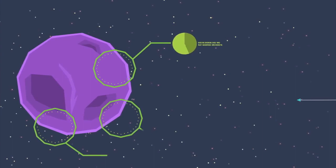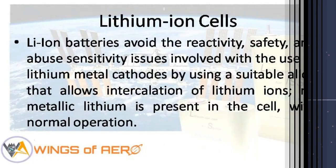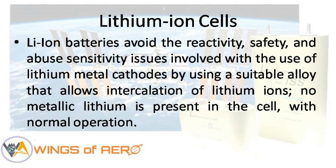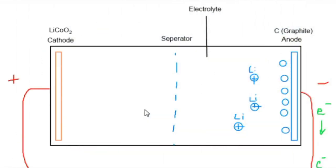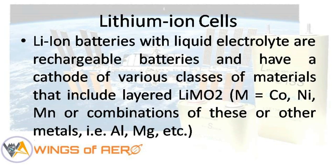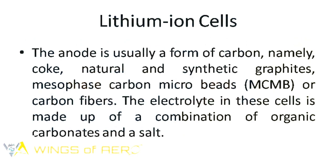There are a wide number of chemistries used in lithium-ion batteries. Lithium-ion batteries avoid the reactivity, safety, and abuse sensitivity issues involved in the use of lithium metal cathodes by using a suitable alloy that allows the intercalation of lithium ions. These rechargeable batteries have a cathode of various classes of material that includes layered LiMO₂ or combinations of other materials.